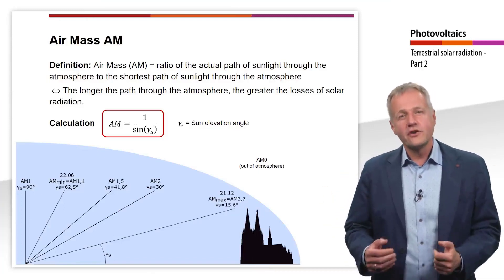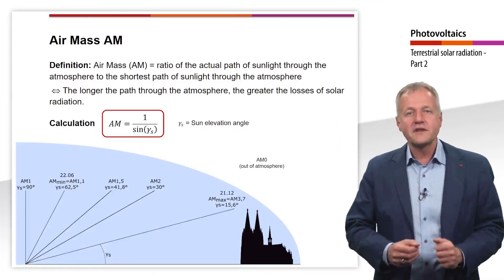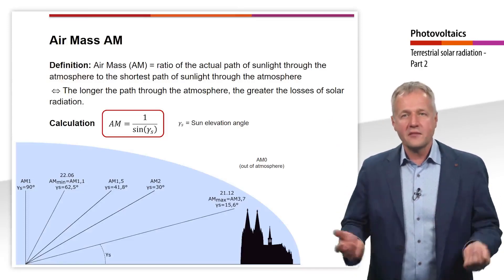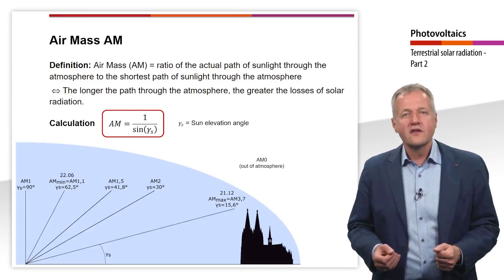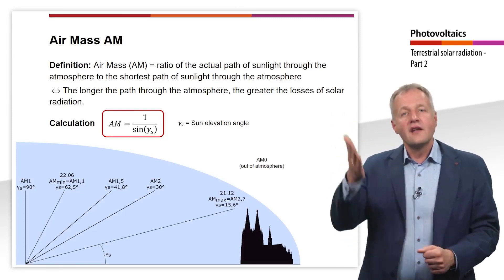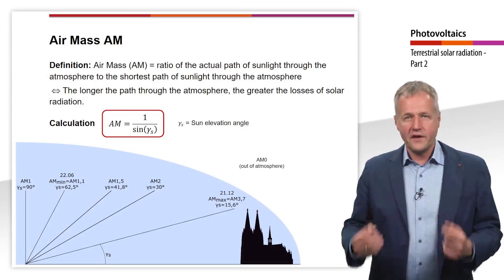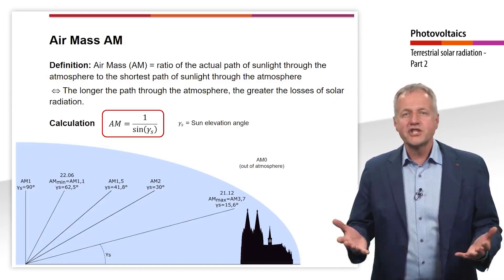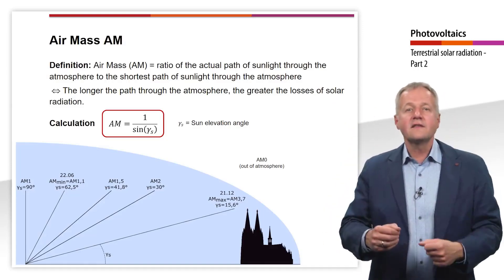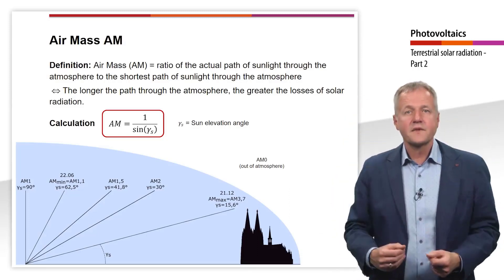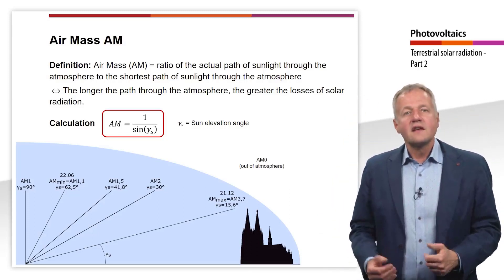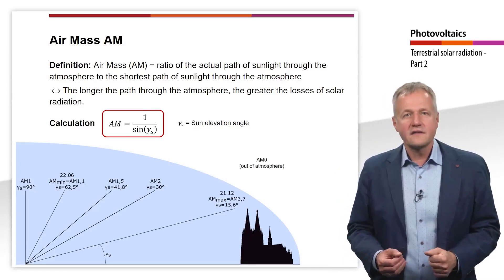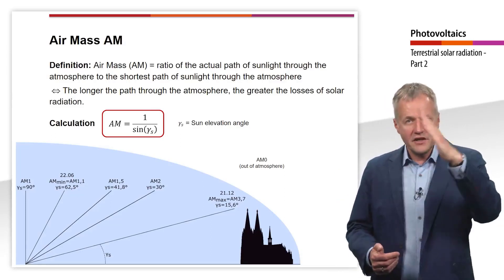The air mass is the ratio of the actual path of sunlight through the atmosphere to the shortest path of sunlight through the atmosphere. In other words, the larger the air mass, the larger the path through the atmosphere. That means the losses of solar radiation increase as the air mass increases. The air mass is inversely proportional to the sine of γs, where γs is the sun elevation angle.